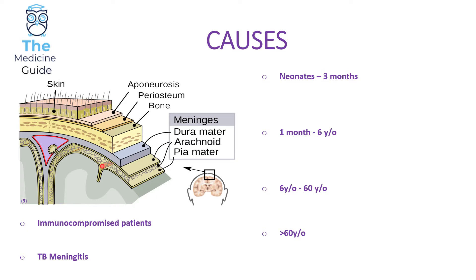Meningitis arises because of an infection of the meninges, leading to inflammation of the meninges. The meninges is this protective layer found across the brain and the spinal cord. The meninges consists of the dura mater, arachnoid mater, and pia mater.